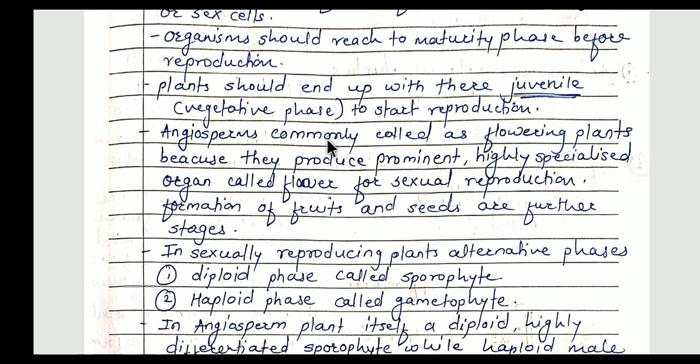In this chapter we are focusing on reproduction in plants only. In the case of plants, they should first finish with their vegetative phase — it means their growth should be completed, root growth should be completed — and then they enter the reproductive phase so that they can reproduce properly and the new young ones formed are exactly similar to their parents.